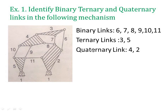Then there is the quaternary link. Link number 2 and link number 4 are quaternary links. Link number 2 can connect to four other links at four locations — link number 1, link number 11, link numbers 7 and 8, and link number 6. So link number 2 is called a quaternary link. Similarly link number 4 is also a quaternary link as it is connected to four other links. Thus we have seen how to classify binary, ternary, and quaternary links.